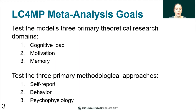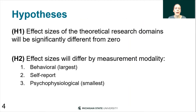We're also interested in testing the three primary methodological approaches: self-report, behavior, and psychophysiology. Self-report measures often include self-reporting emotions, while behavior measures may include things like secondary task reaction times and signal detection tasks for memory. Psychophysiology measures often include heart rate, skin conductance, and facial EMG. We had two core hypotheses: one, that effect sizes of the theoretical research domains will be significantly different from zero; and two, that effect sizes will differ by measurement modality, with behavioral measures being the largest, followed by self-report, and psychophysiological measures having the smallest effect sizes.